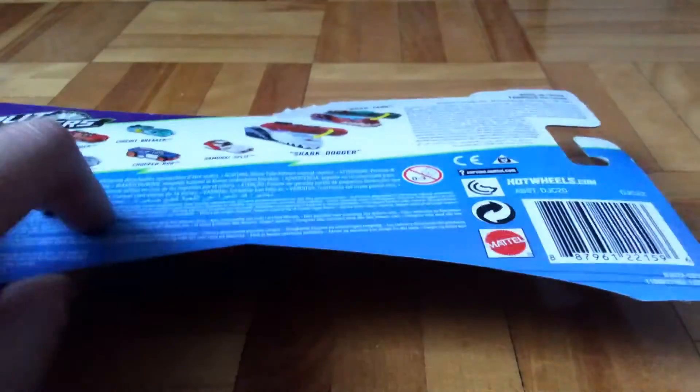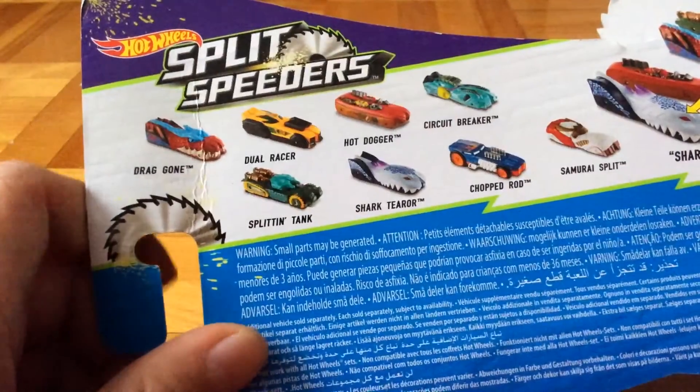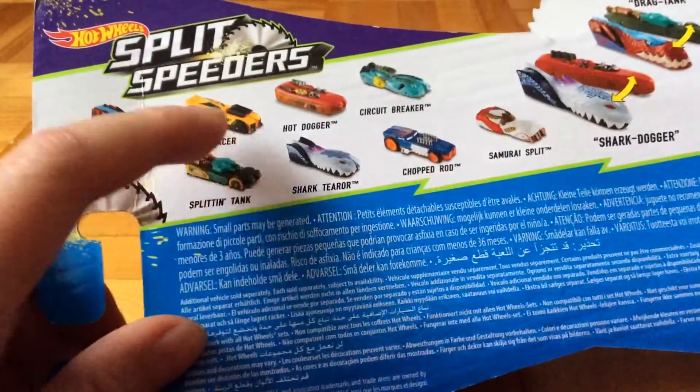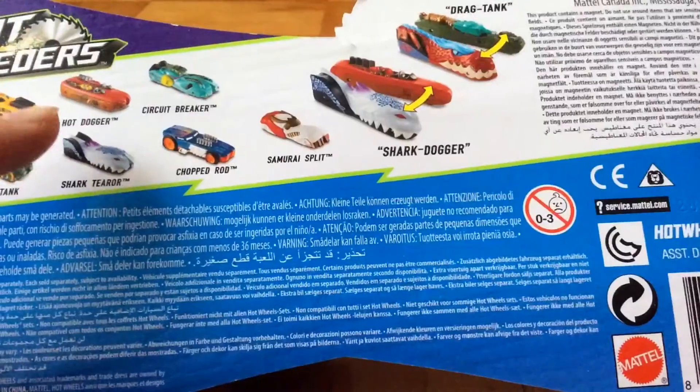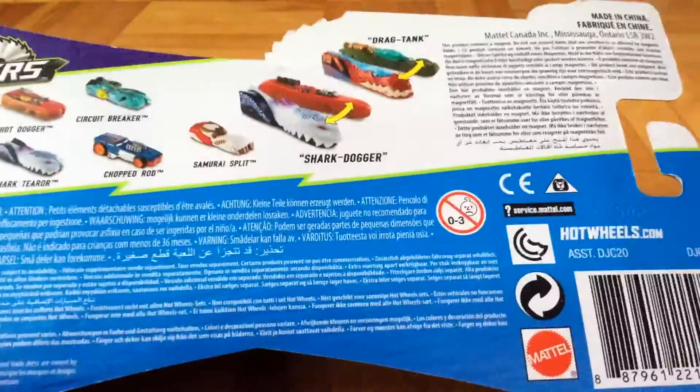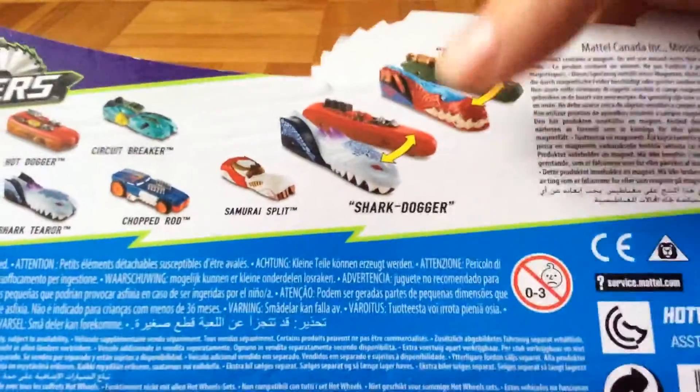This is what the car supposedly can do - splits in two. On the back of the box it shows some other models: Dragon Splint Tank, Dual Racer, Hot Dogger, Shark Terror, Circuit Breaker, Chop Rod, and Samurai Split. They also say that I can mix and match the cars.